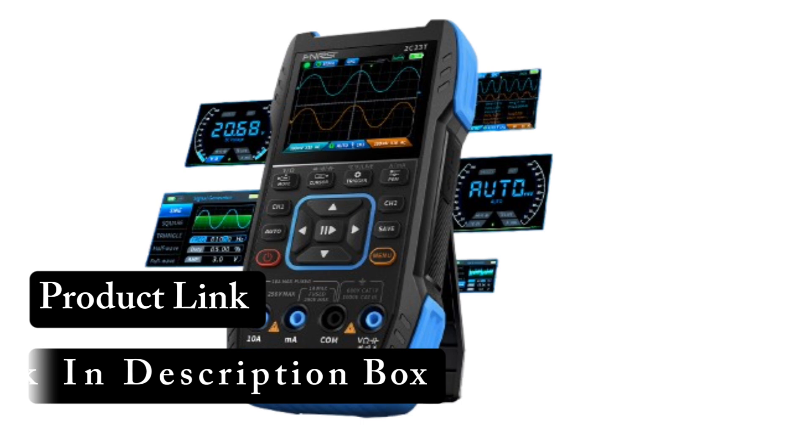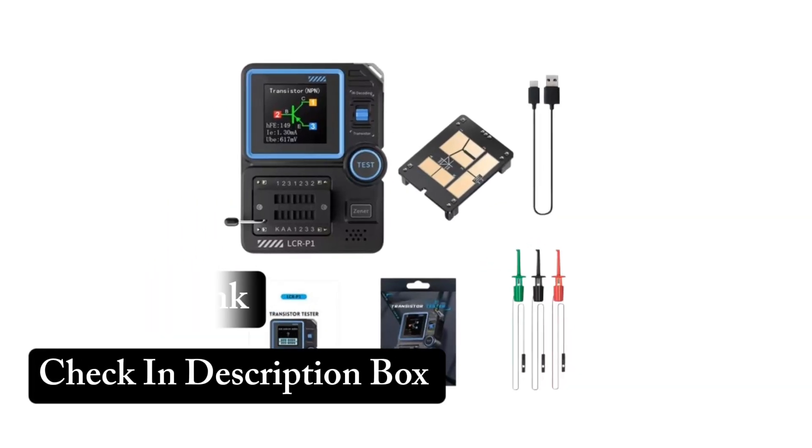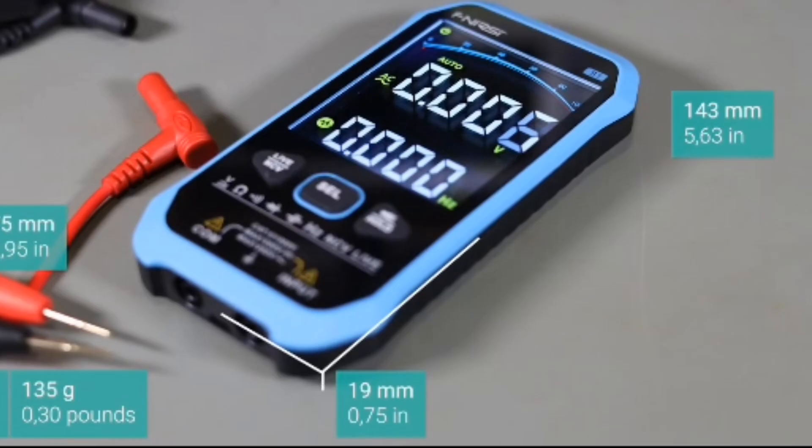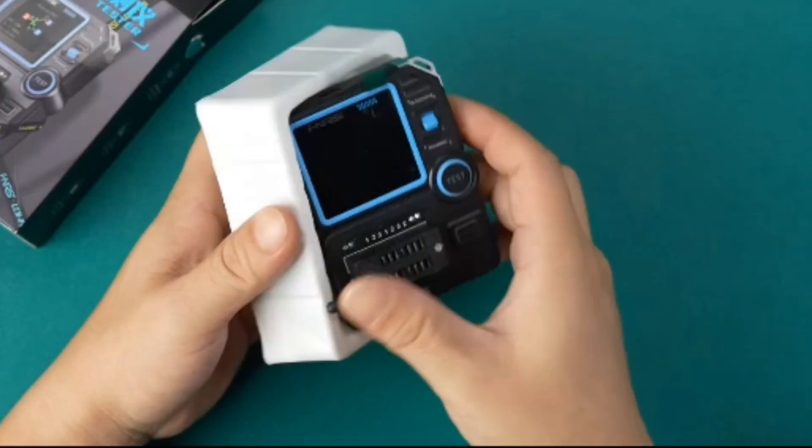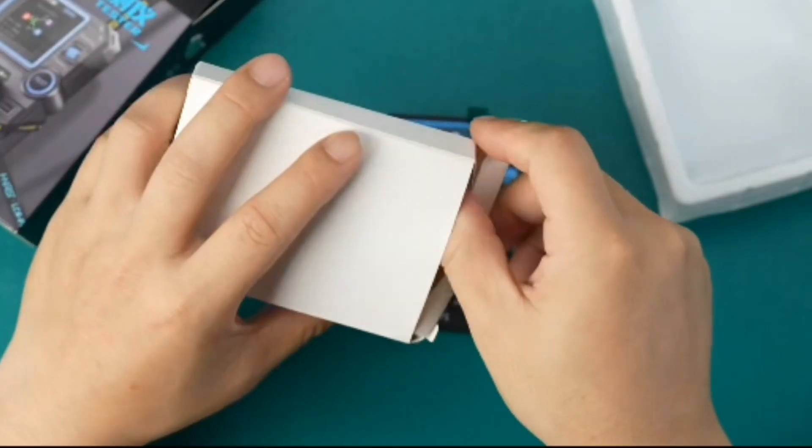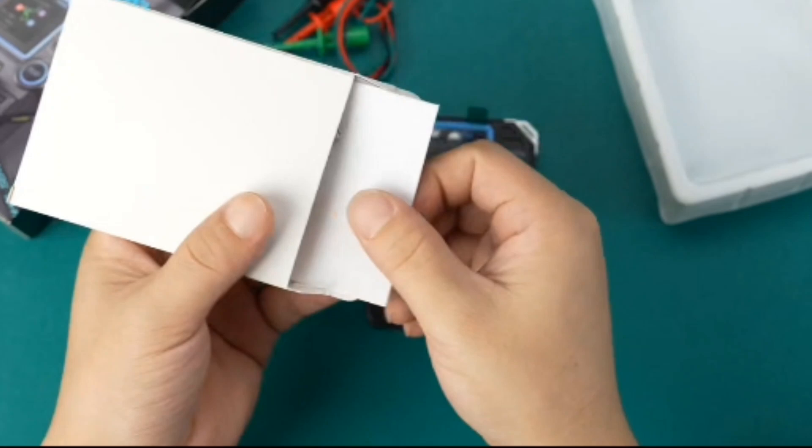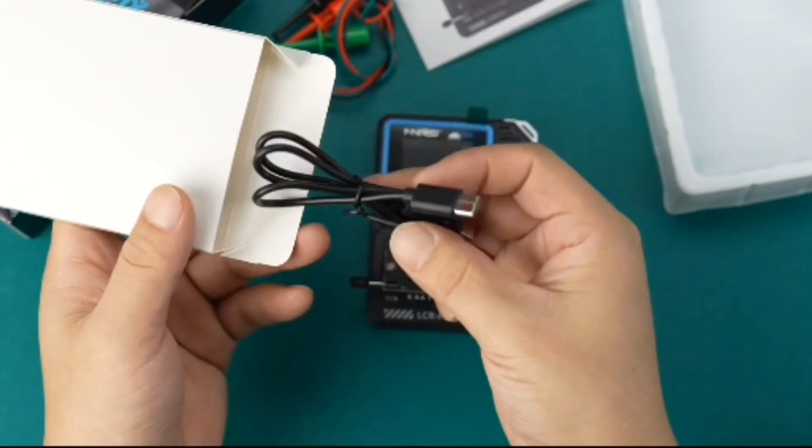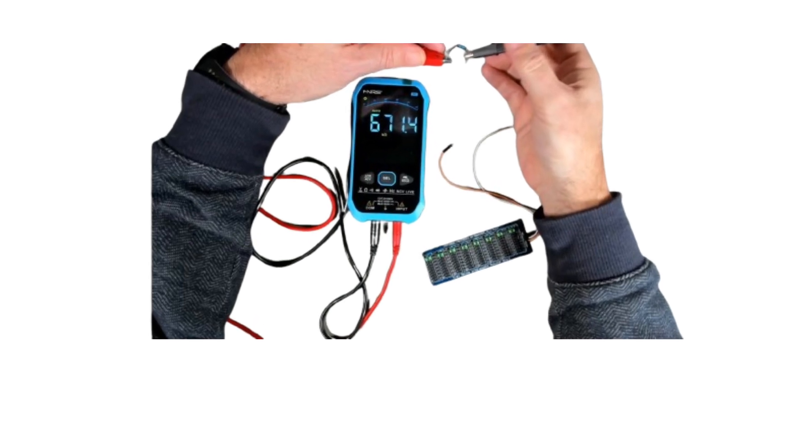Look for a multimeter with high accuracy ratings and fine resolution. A good model should have at least a 0.5% accuracy level for reliable measurements. The best DMMs offer a range of functions, including AC/DC voltage measurement, resistance, capacitance, frequency, and temperature. Advanced models may even include features like diode testing and continuity checking.